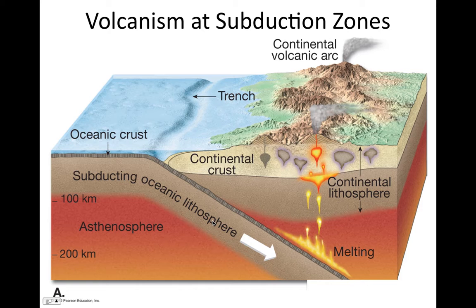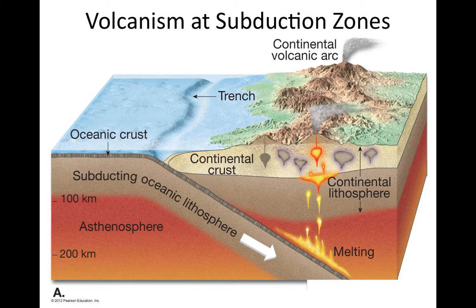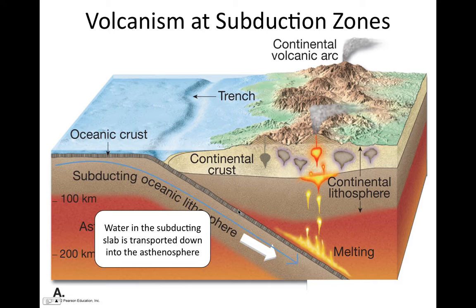We left off at the question as to why volcanism occurs along subduction zones, and that's where we're going to start. Interestingly enough, the reason volcanism occurs along subduction zones is water. Water is subducted down into the Earth's mantle in the subducting oceanic lithosphere. Water is trapped in the crust, and as it's subducted down, it eventually reaches a depth of around 100 kilometers, where the pressure and temperature is large enough that the rock begins to undergo chemical reactions called metamorphic reactions, and the water escapes.